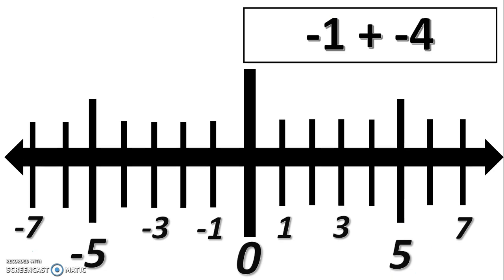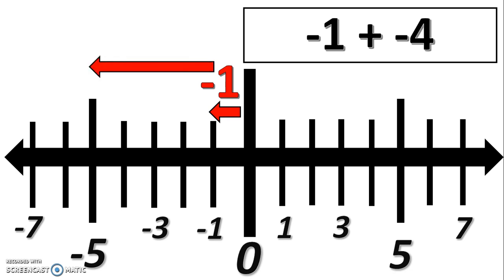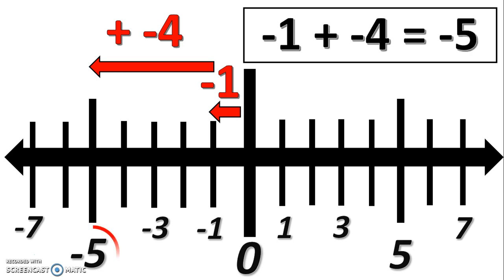The same is true when we add negative integers. For negative one plus negative four, from zero we would move to the left one. And from that negative one, we would then move an additional four spaces to the left to represent our negative four. When we do this, we would end at the negative five integer. So negative one plus negative four is negative five.